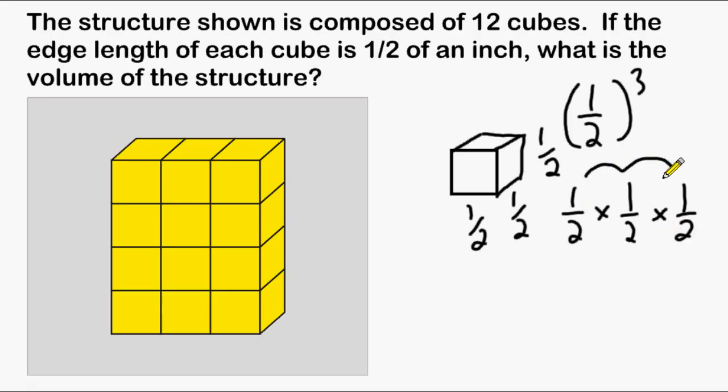If we multiply all of the numerators together, that's going to be a product of one, and for the denominators we have two times two which is four, and four times two which is eight. So the volume of each cube is one eighth of a cubic unit.